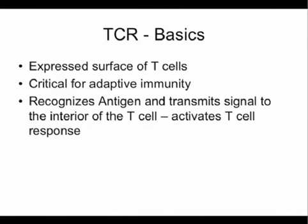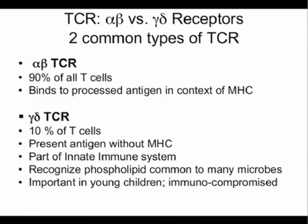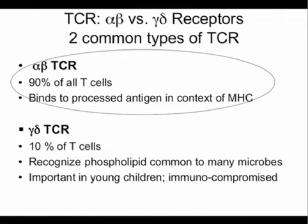The basics about the T cell receptor: it's expressed on the surface of T cells, it's critical for adaptive immunity — you won't get an adaptive immune response without the T cell receptor present. It recognizes the antigen and transmits really important signal information inside the T cell, allowing the T cell to proliferate, expand, secrete cytokines, and go on to fight the infection. There are two kinds of T cell receptor: an alpha beta receptor and a gamma delta receptor — two very different kinds of T cell. For the purposes of today, we're going to restrict our talk to the alpha beta T cell receptor, which is the most common type in circulation.